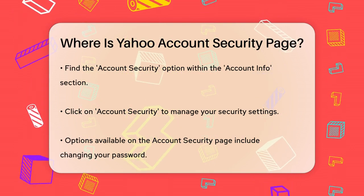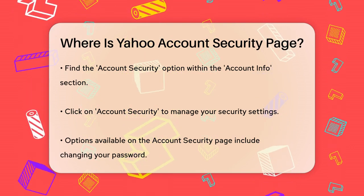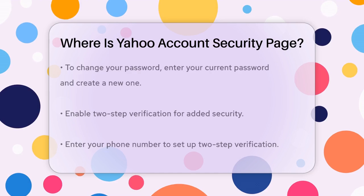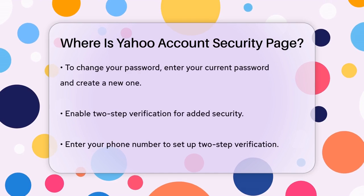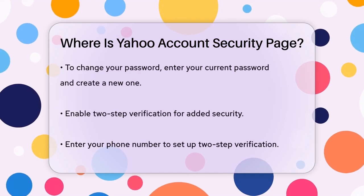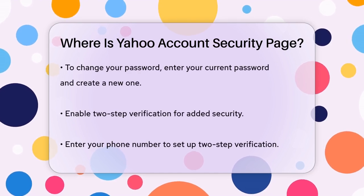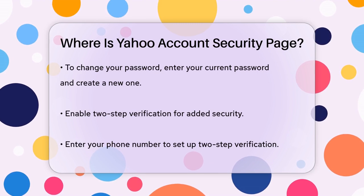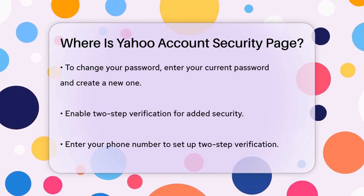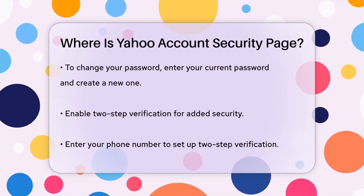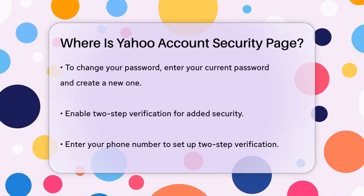Click on Account Security, and you'll be taken to a page where you can manage all your security settings. This includes changing your password, enabling two-step verification, and setting up recovery phone numbers or email addresses, and more.